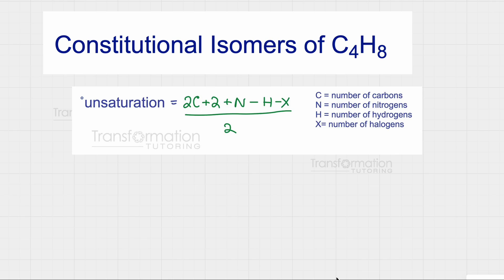Let's find all the constitutional isomers of C4H8. Constitutional isomers are molecules that have the same formula but different structure and different names. So all of my isomers here will have four carbons and eight hydrogens, but they will all be different molecules.